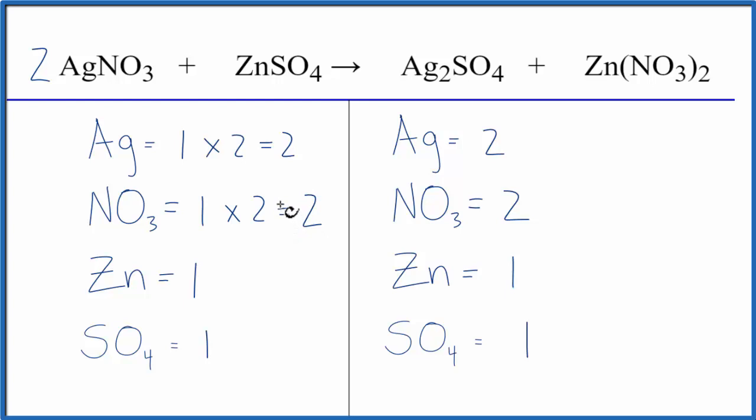This equation is balanced. By counting these nitrates and these sulfates as just one item, because they appear on both sides of the equation, that makes the balancing a lot quicker.